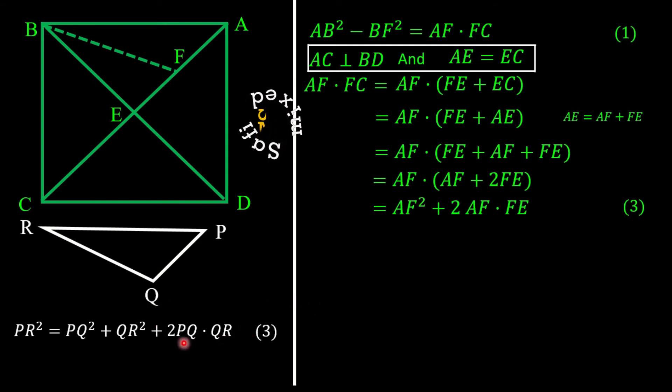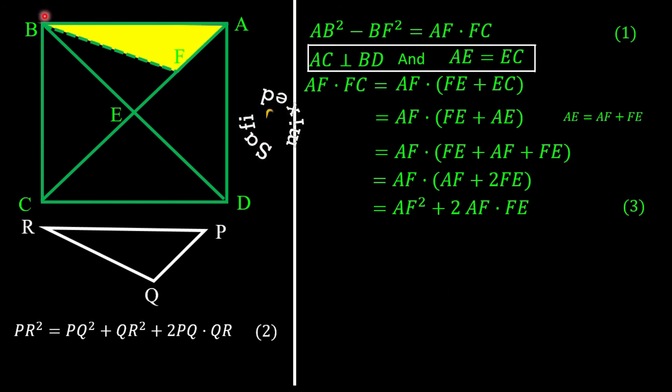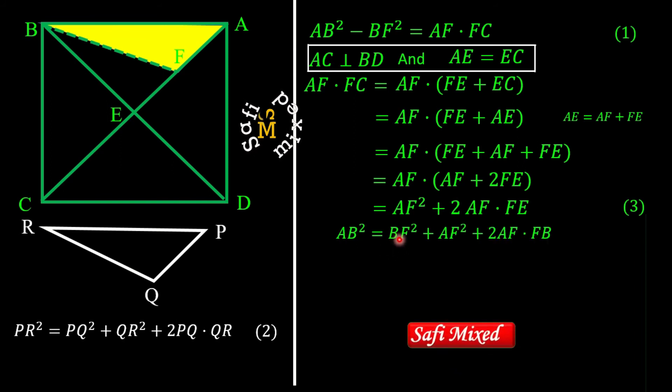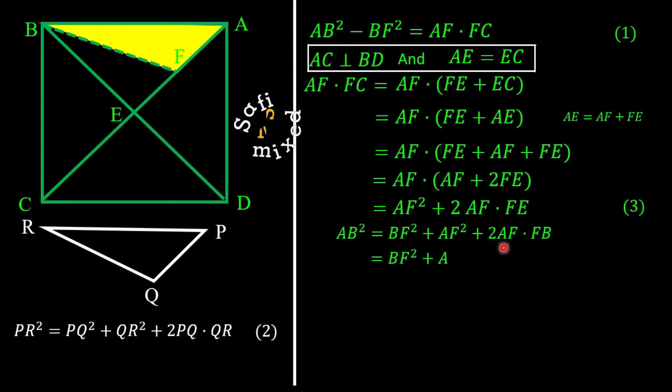Using this relation I can write for obtuse triangle AFB the relation AB² = BF² + AF² + 2AF·FB. And I can put this result into the form AB² = BF² + AF² + 2AF·FB·cos(θ), where θ is the angle between side AF and FB.